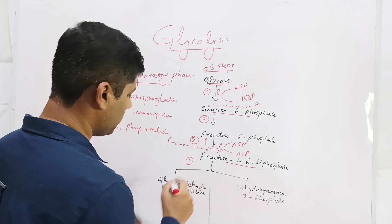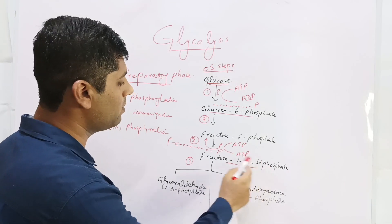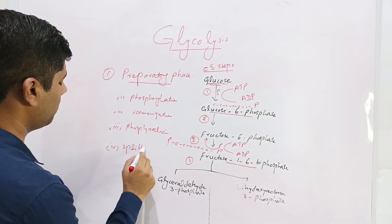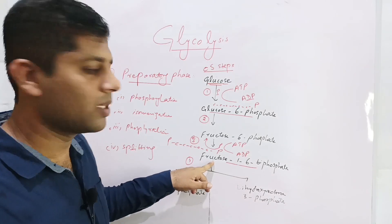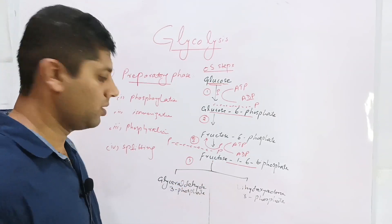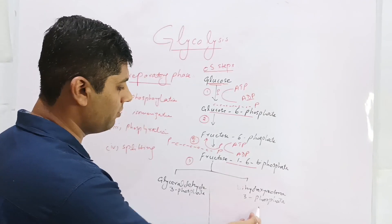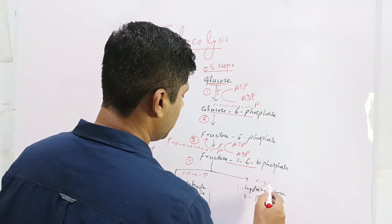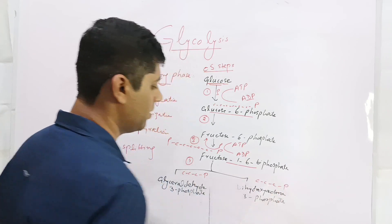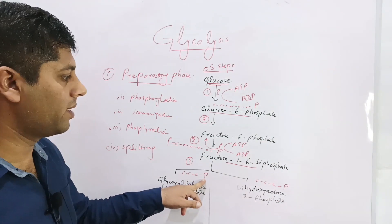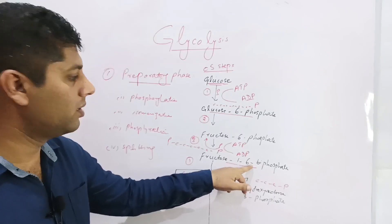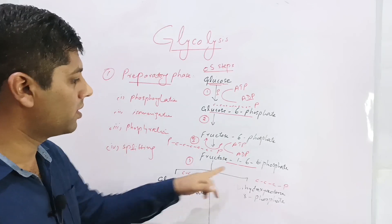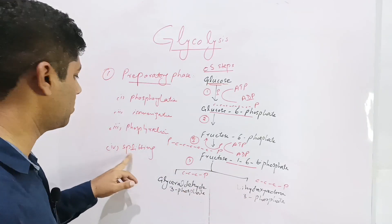In the fourth step, fructose-1,6-bisphosphate is broken down into two three-carbon molecules. This step is called splitting. The six-carbon fructose molecule is split into glyceraldehyde-3-phosphate (G3P) and dihydroxyacetone phosphate (DHAP). Both are three-carbon compounds, each carrying one phosphate group — one from carbon six going to G3P and one from carbon one going to DHAP.